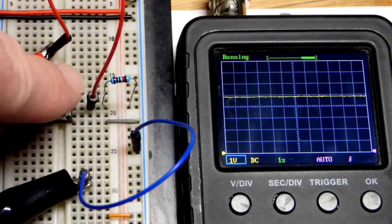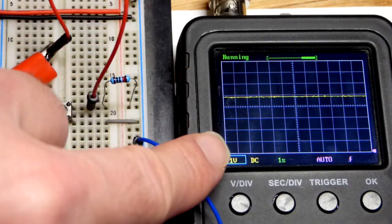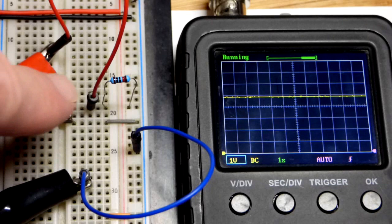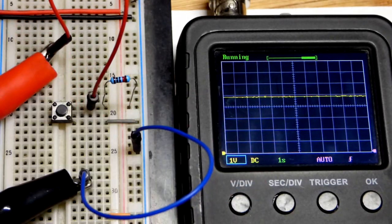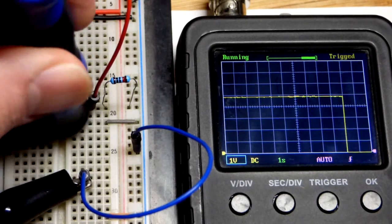So we have the positive supply through that resistor. Since this oscilloscope doesn't really need any current, we have the full 5 volts right there. I can press the switch now and we have 0 volts.